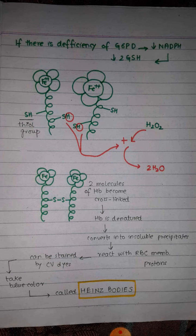If a person suffers from deficiency of glucose 6-phosphate dehydrogenase, there is reduced production of NADPH. When there is less NADPH, there is less reduced form of glutathione. So if a person then suffers from oxidative stress — for example, hydrogen peroxide is produced — there is insufficient protection.